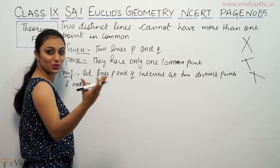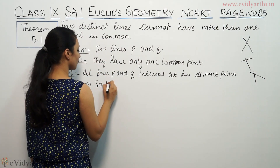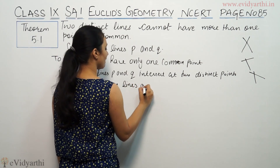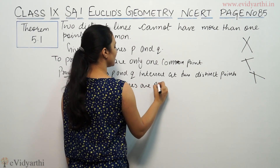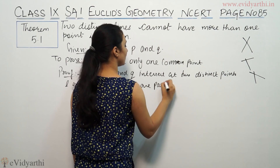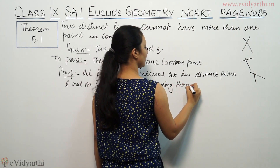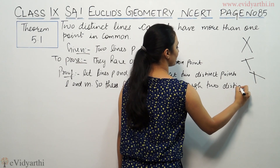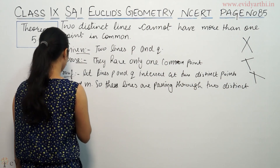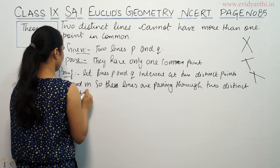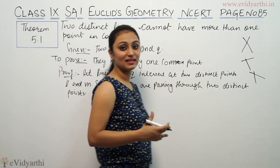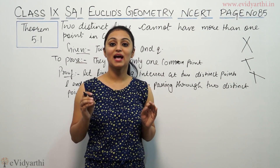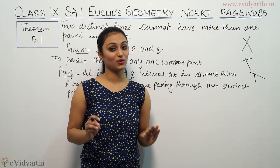So these lines are passing through two distinct points. We have to prove that there is only one point — two distinct lines can have one and only one point in common.